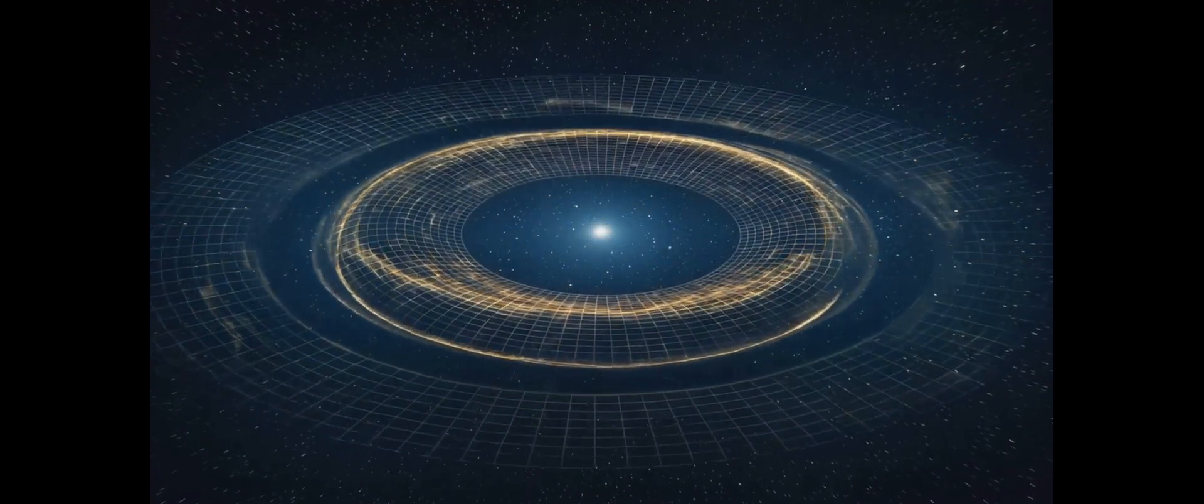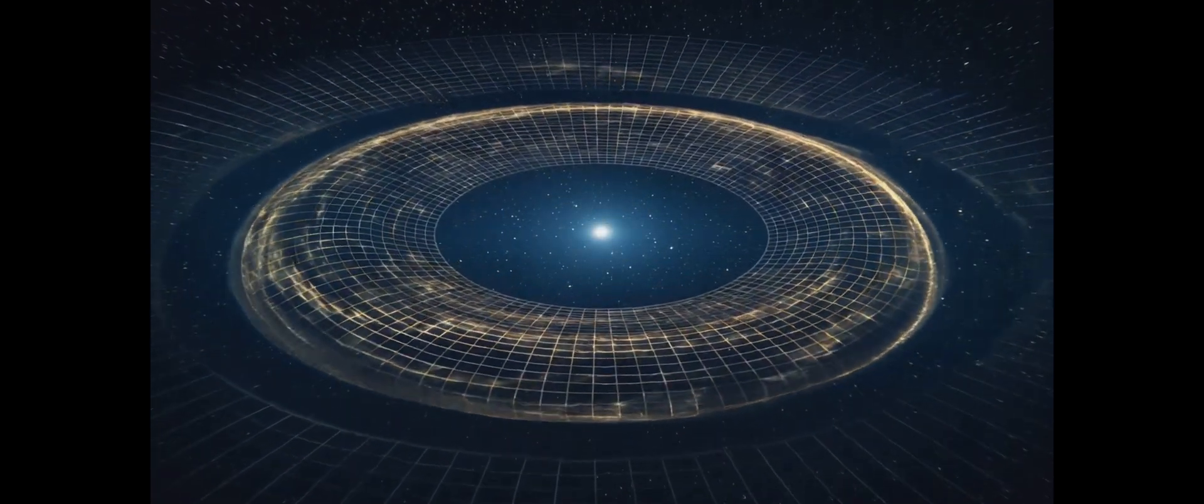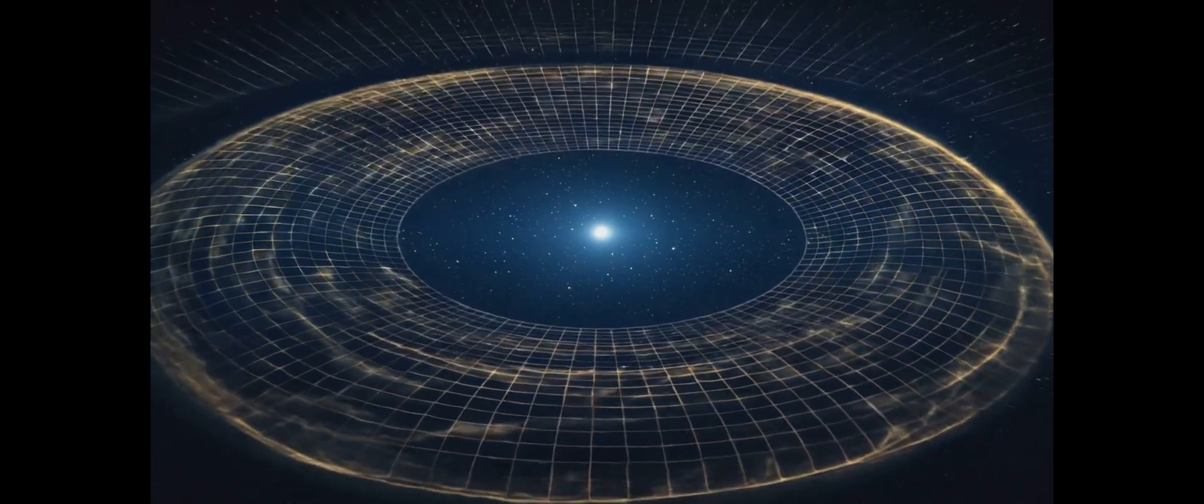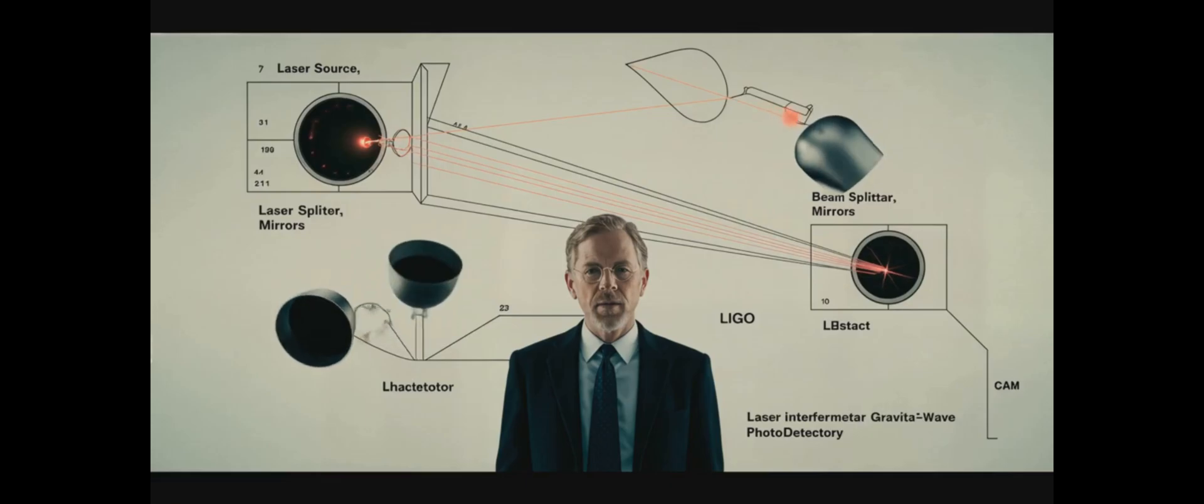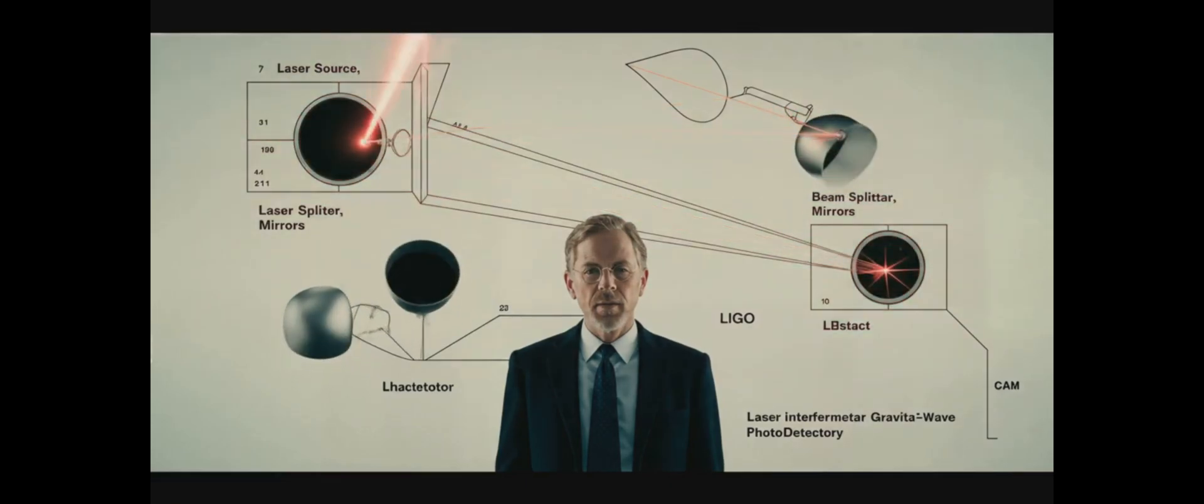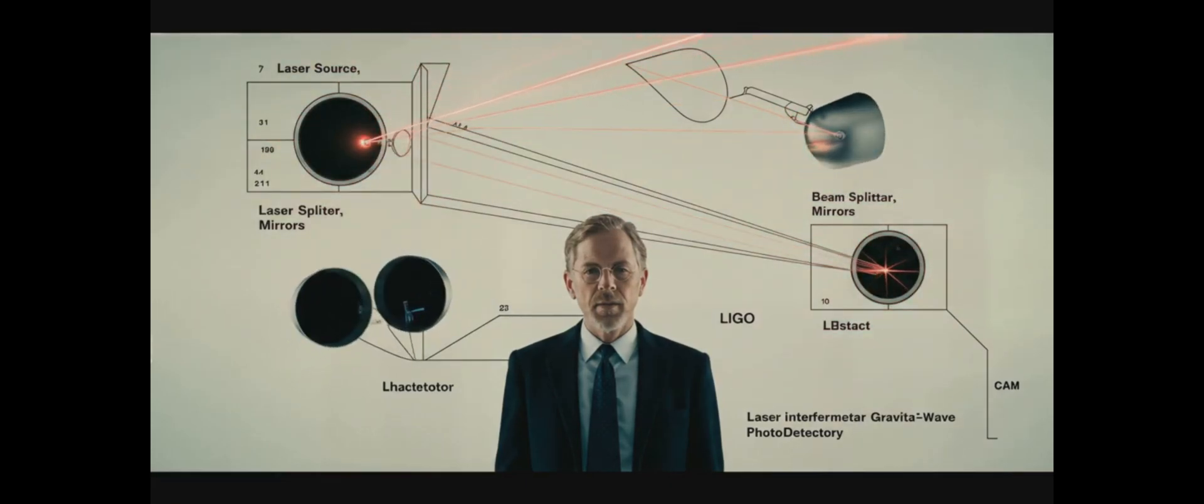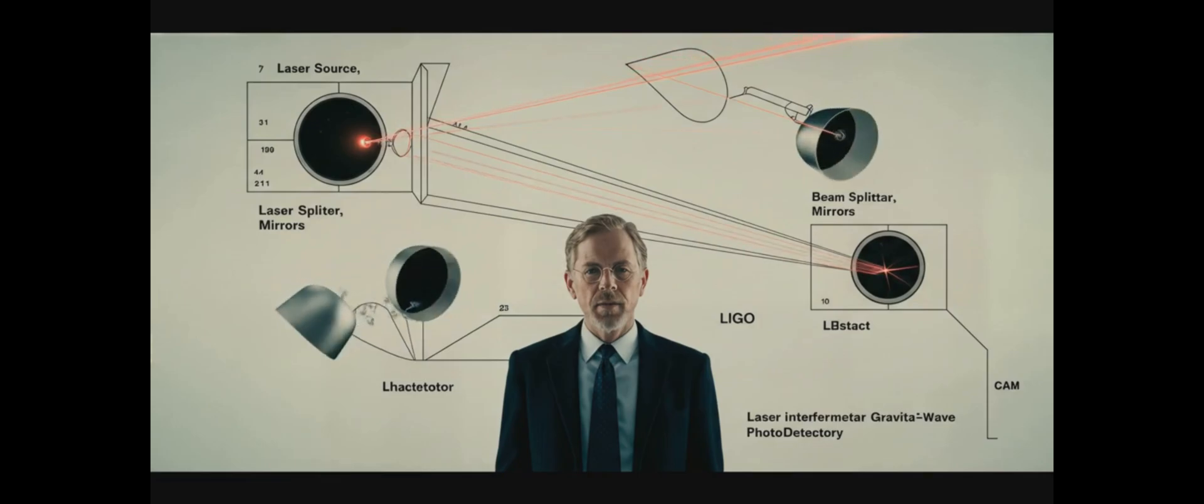Black holes don't just devour light and matter, they also warp the very fabric of space-time. This warping manifests in several fascinating ways. Gravitational waves, first predicted by Einstein and only recently detected, open up a new way of observing the universe.